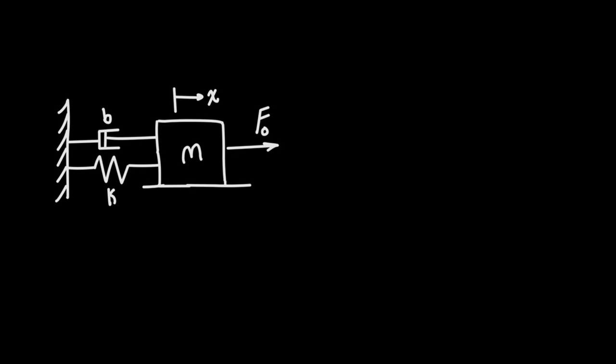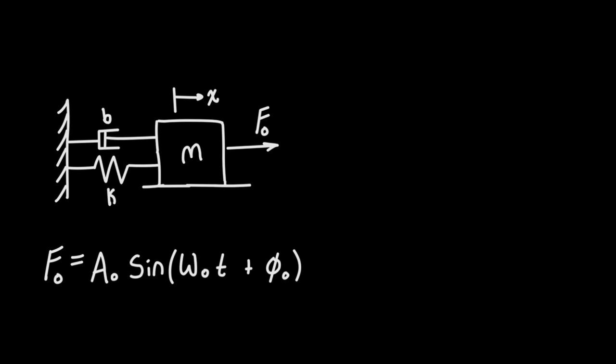If we want to maintain oscillations when we have a damper we need to have an applied force. What that applied force looks like — they usually call this a sinusoidally applied force — meaning the force is not constant but is going to be changing as a function of time. So our applied force is equal to the amplitude of that applied force times sine of omega naught times time plus the phase shift of that applied force.